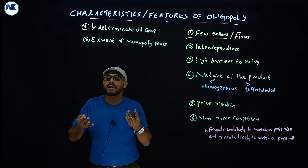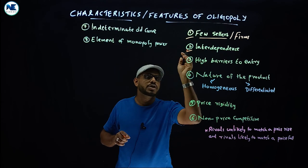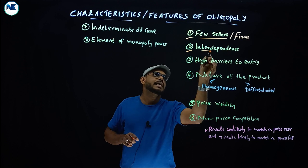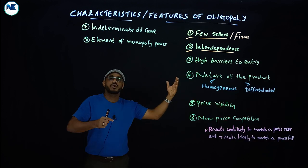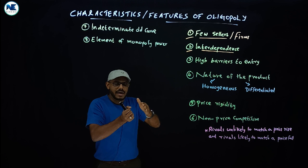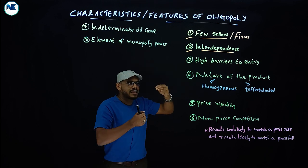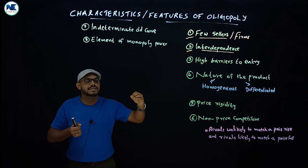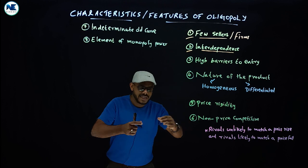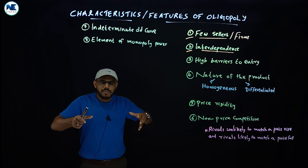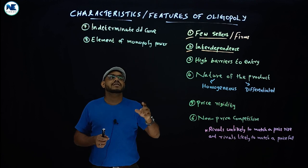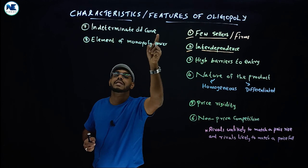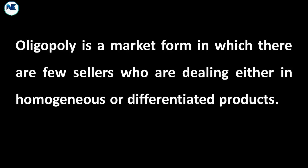The second point is the crucial feature of oligopoly: interdependence among firms. The price and output policy of one firm will definitely affect the price and output policy of other firms. Under oligopoly, the actions and reactions of rivals are always considered. Among the few firms, there exists a high level of interdependence. This high level of interdependence is the main reason for the indeterminate demand curve, also known as the kinked demand curve.